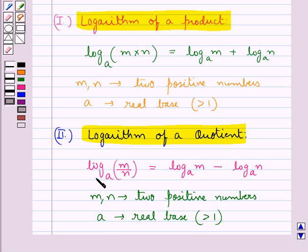So, log of m upon n to the base a is equal to log m to the base a minus log n to the base a.